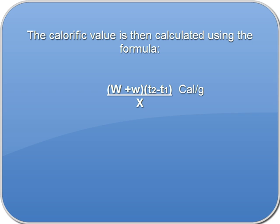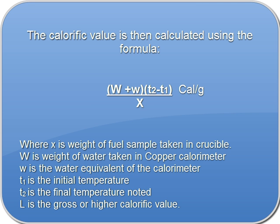The calorific value is then calculated using the formula, where x is weight of fuel sample taken in crucible, capital W is weight of water taken in copper calorimeter, small w is the water equivalent of the calorimeter, T1 is the initial temperature, T2 is the final temperature noted, and L is the gross or higher calorific value.